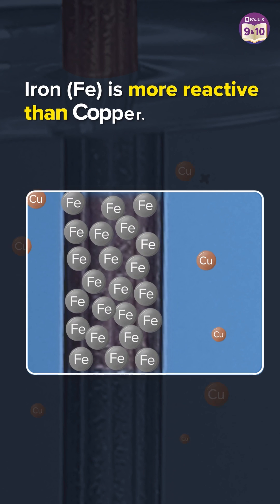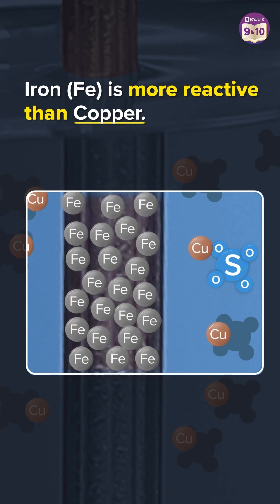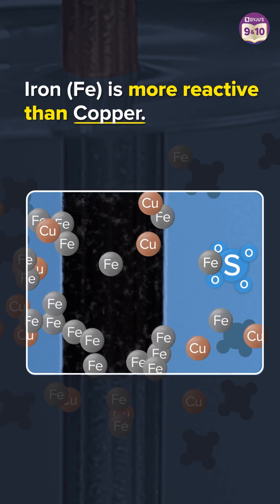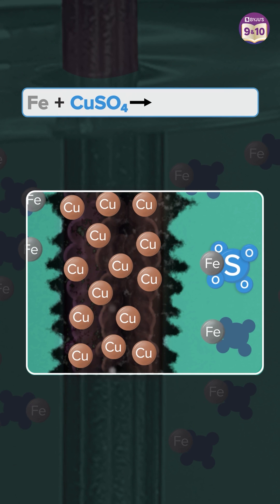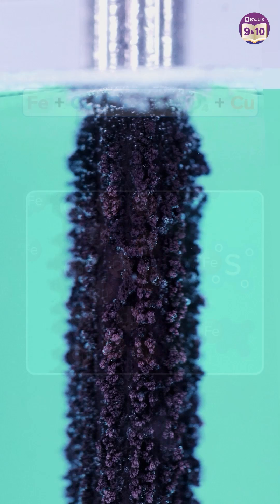However, iron is more reactive than copper. Hence, iron displaces copper in the solution. It is this deposit of copper that leaves the nail brownish.